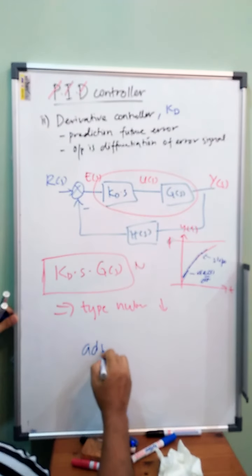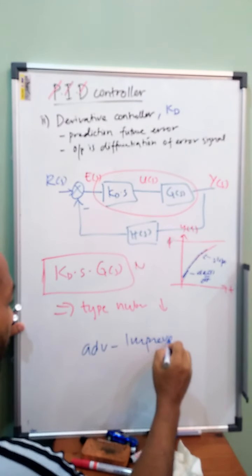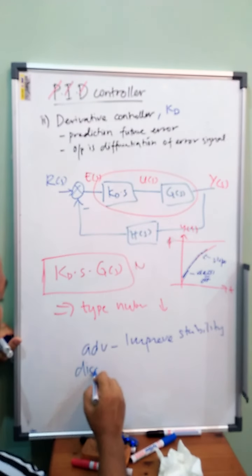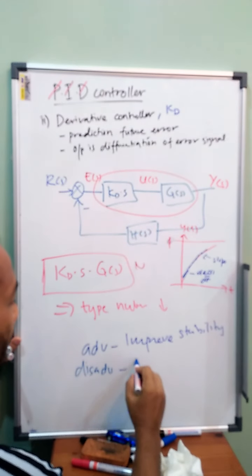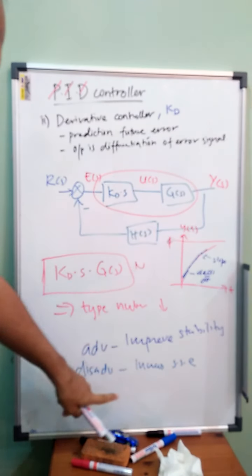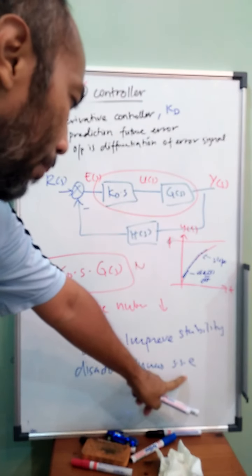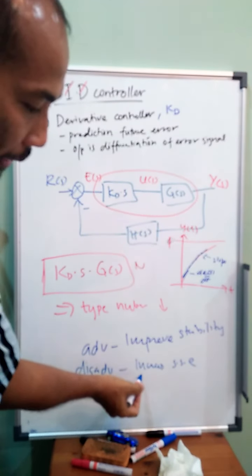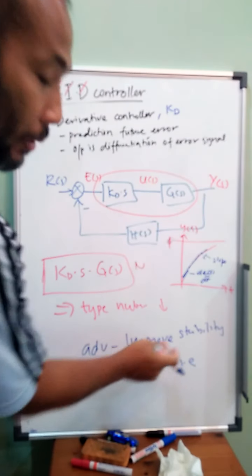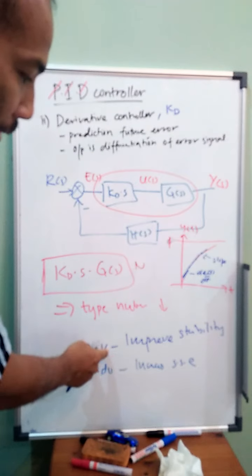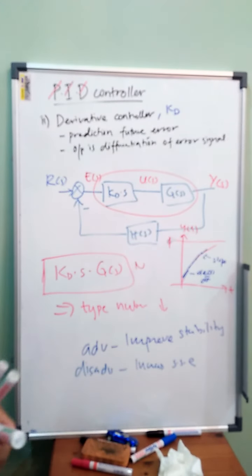Advantage: improve stability. However, the disadvantage is increase steady state error, because the type number is reduced. It looks like opposite. Before this, integration, the advantage is steady state improve, stability decrease. For derivative controller, opposite: advantage is increase stability and disadvantage is increase steady state error. That's all for derivative controller.